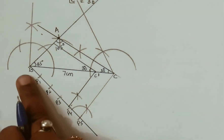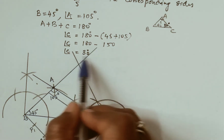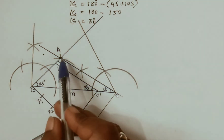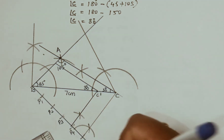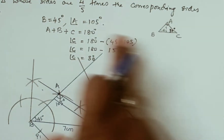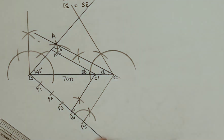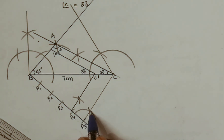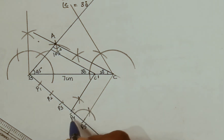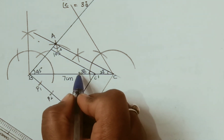Let me recap. First you have to draw triangle ABC. Here you should know the base angle — we did not know it, so we calculated it using angle sum property and found this angle is 30°. Then construct ABC. After that, draw one acute angle ray from B. Since the ratio is 4/5, the denominator is 5, so divide the ray into 5 equal parts. Join the last point P5 to C. Then construct the same angle at P4 and draw the parallel line to get C dash. The same way, draw the parallel line from C using the 30° angle.